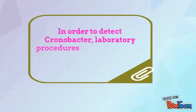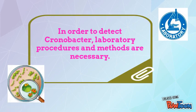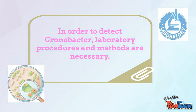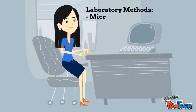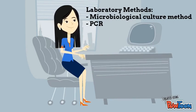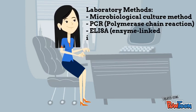In order to detect Chronobacter, collaborative procedures and methods are necessary. Chronobacter species are generally isolated and identified by microbiological culture method, PCR or polymerase chain reaction, or ELISA or enzyme-linked immunosorbent assay. These methods are generally being used in detecting Chronobacter for both food source and human samples.